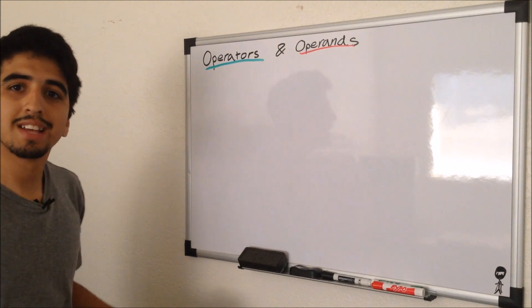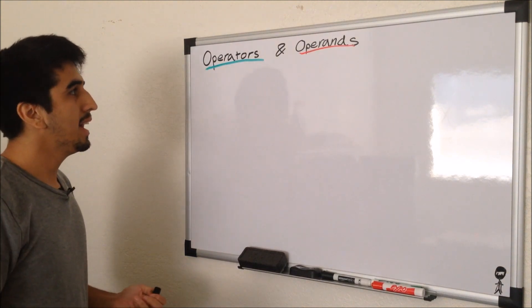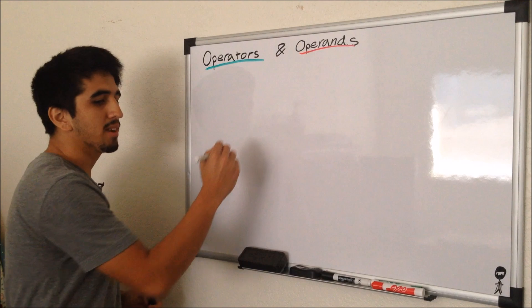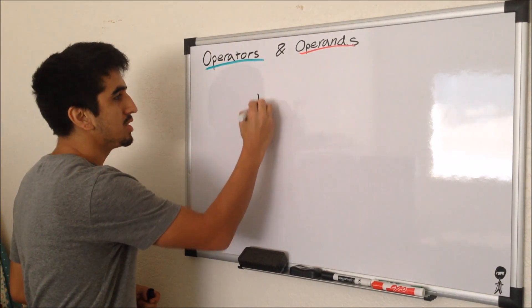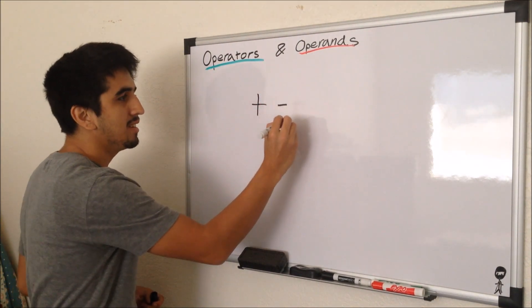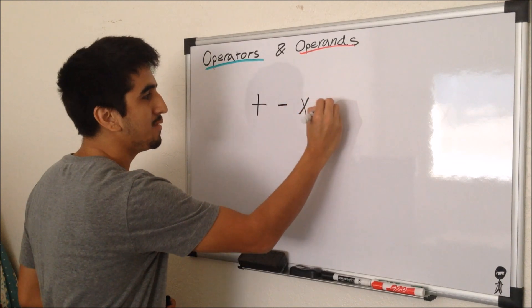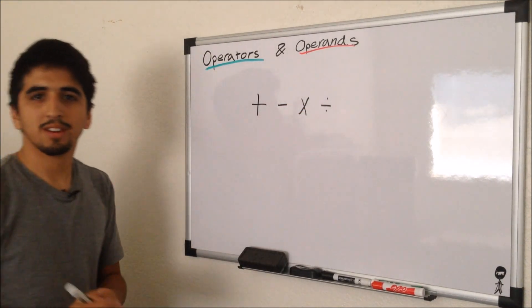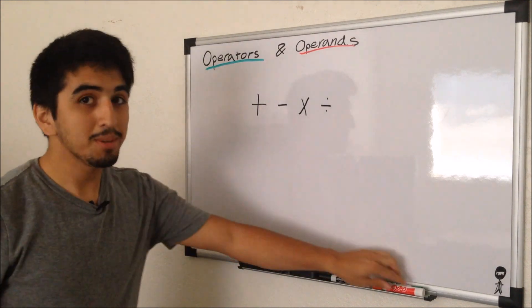Four basic operators are the addition sign, the subtraction sign, the multiplication sign, and the division sign. We've all seen these before, we know what they are, but you probably didn't know what they were called.